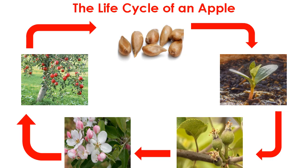There you have it, the life cycle of an apple. It starts out as seeds which are planted in soil and will sprout a tree. That tree will form buds which will form blossoms. Eventually the blossoms will fall off the tree and leave apples in their place.